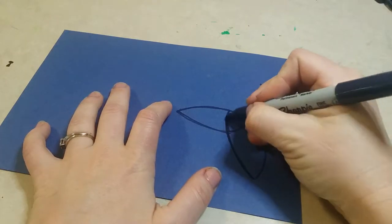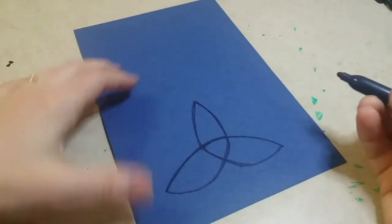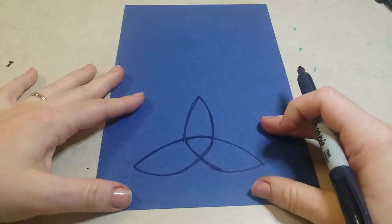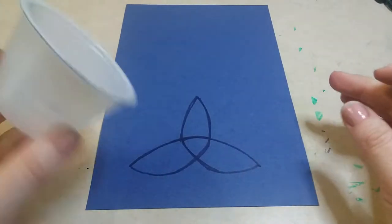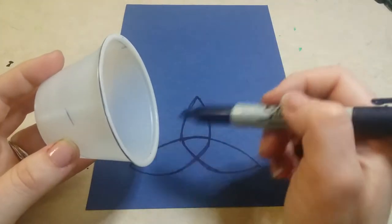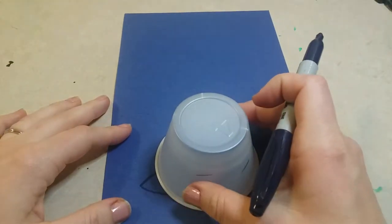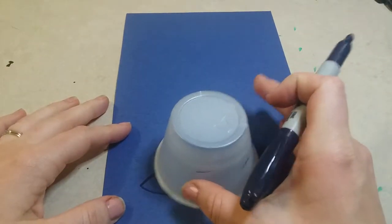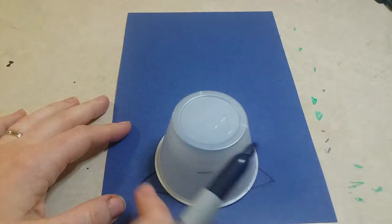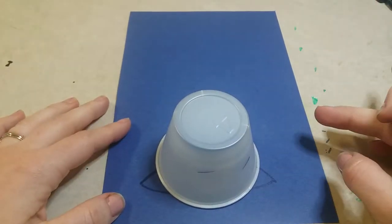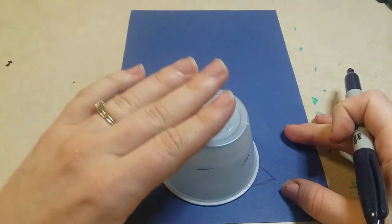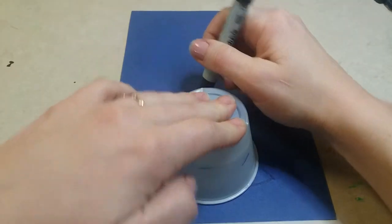Once you have this shape done, you're gonna get your cup and you're gonna start with the open side down. You're gonna place it around or center it on that cross there, so some of the edges of the knot are going to be sticking out and that's okay. You're gonna hold it down with one hand and trace around the bottom.